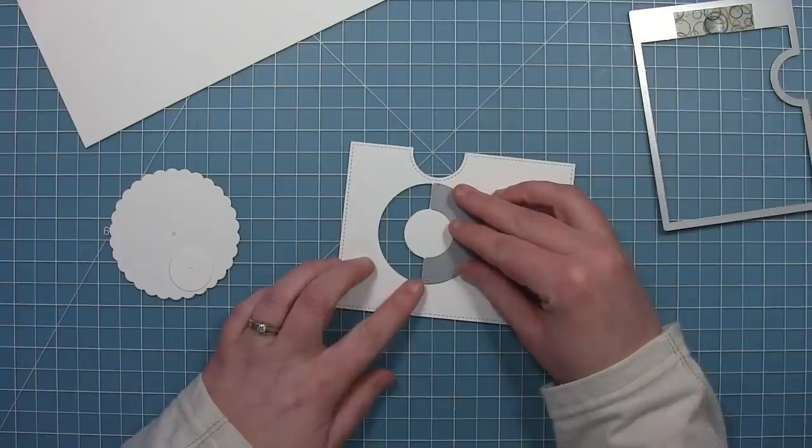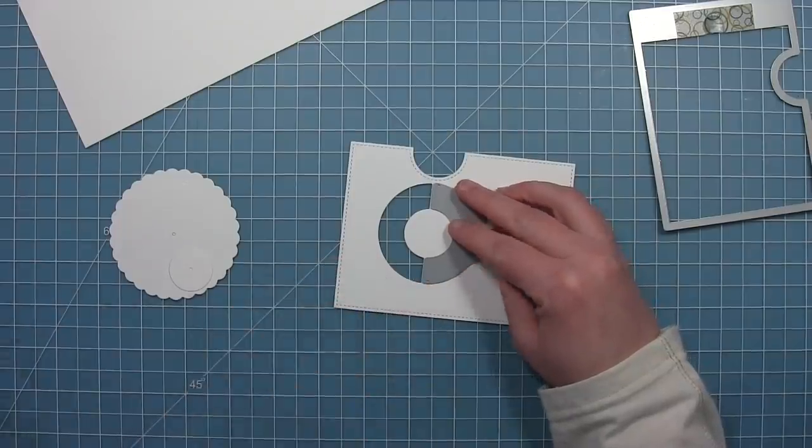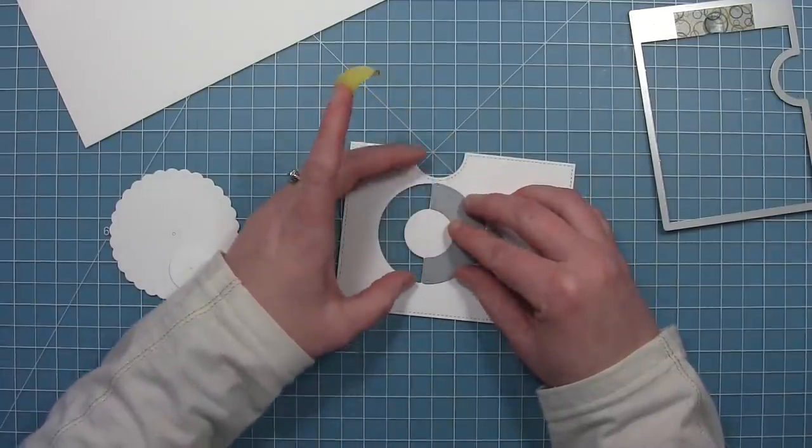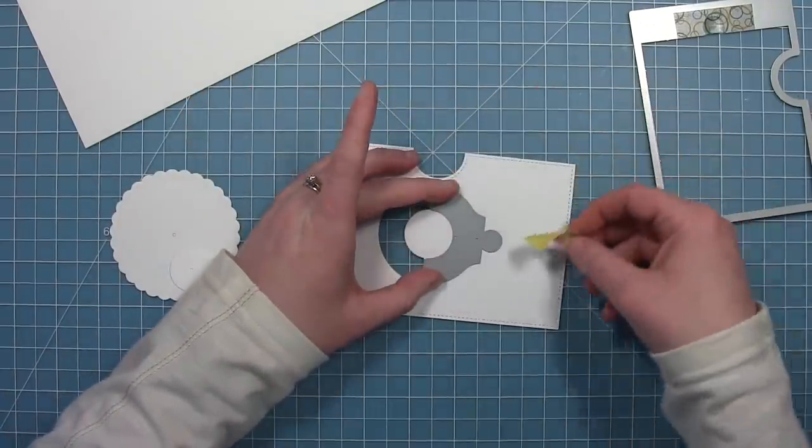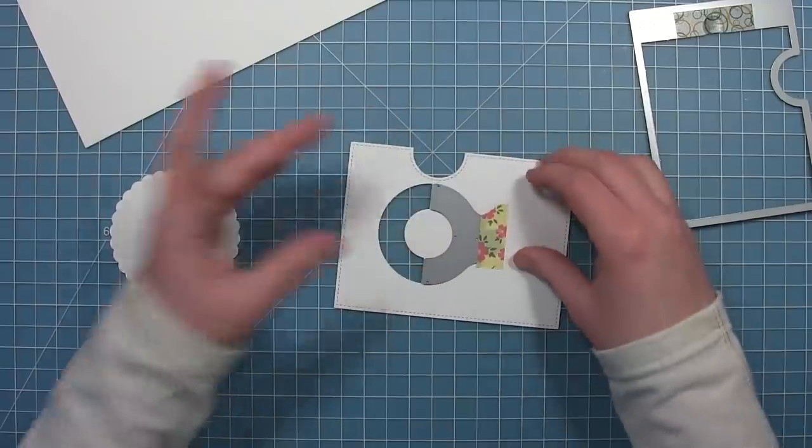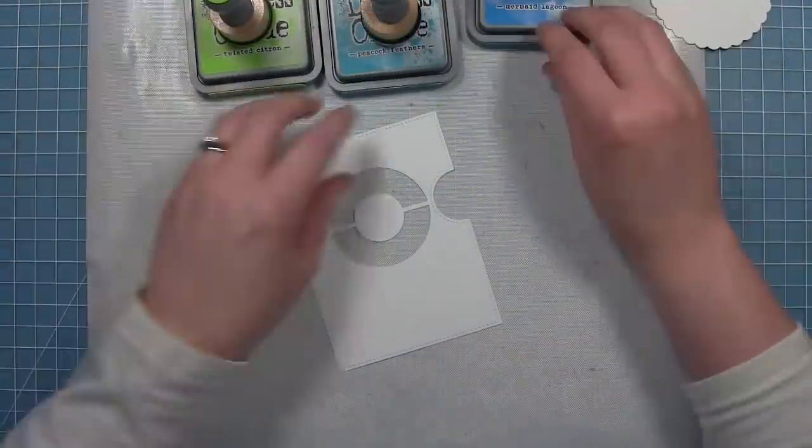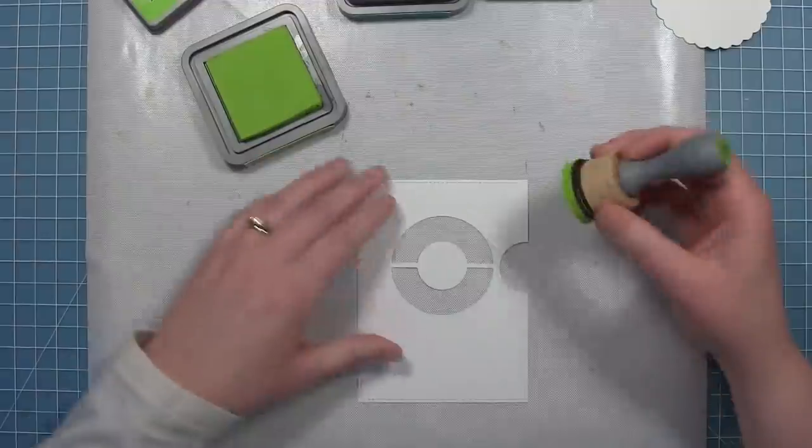So once I have that cut, I can take off the semi-circle puzzle piece here and just line up those two edges with the die cut area from before. And this will allow me to cut another semi-circle right below it. So you can see I have a full circle here.